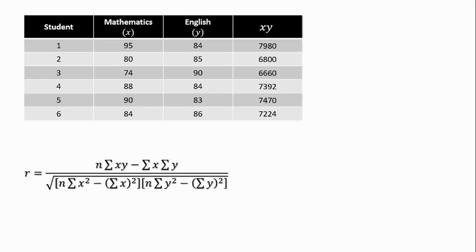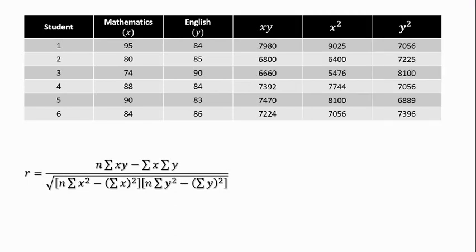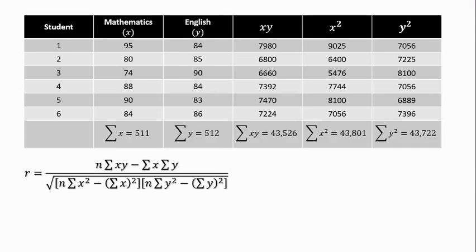The formula will need us to construct the following columns: XY, which is the product of the x and y values; X squared, which is the square of the math grades; and y squared for the square of the English grades. Now, we take the sum of the values in each column and the values are shown.